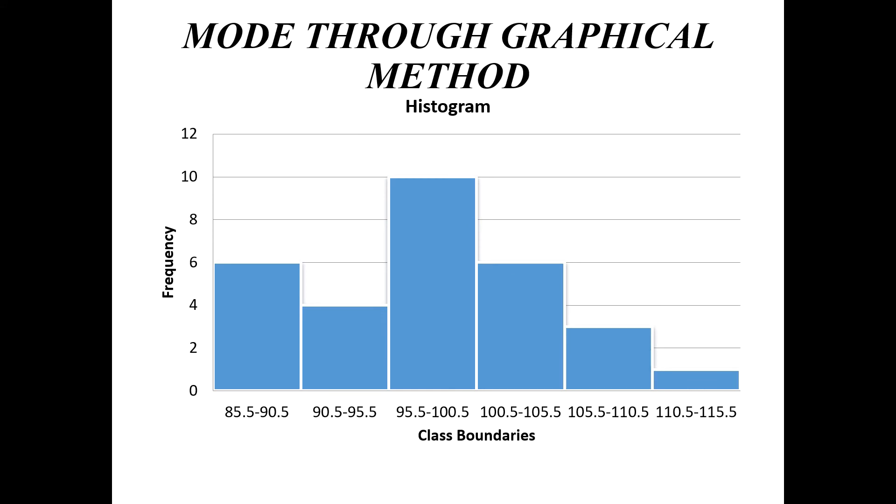Here it is the bar with class boundary 95.5 to 100.5 has the highest frequency. Here we will join the right top corner of the bar with the right top corner of the previous bar. Similarly, we will join the top left corner of the highest bar to the top left corner of the next bar.